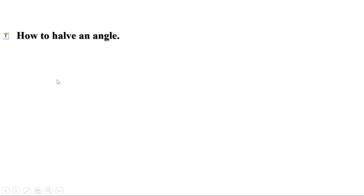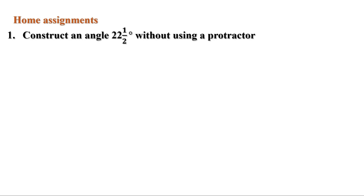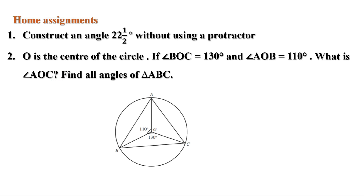Today we have learned how to halve an angle and how to draw a triangle when the three angles and circumradius are given. Now there are two homeworks. First: construct an angle of 22 and a half degrees without using a protractor. Second: O is the center of the circle. If angle BOC equals 130 degrees and angle AOB equals 110 degrees, what is angle AOC? Find all angles of triangle ABC.